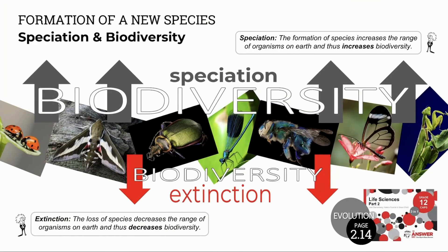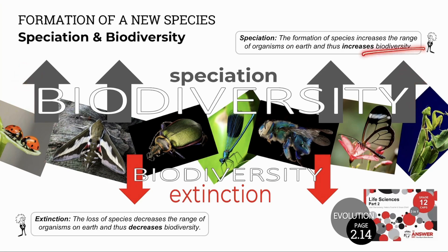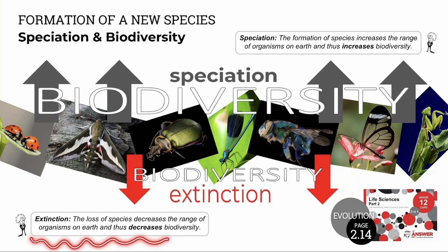Speciation, or the formation of new species, affects biodiversity. Speciation increases biodiversity because it increases the range or variety of organisms on Earth. So the more species, the more biodiversity.